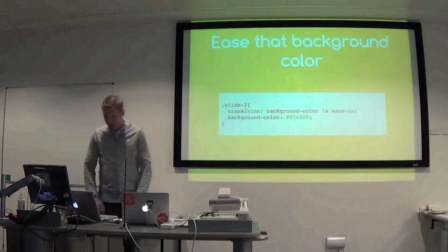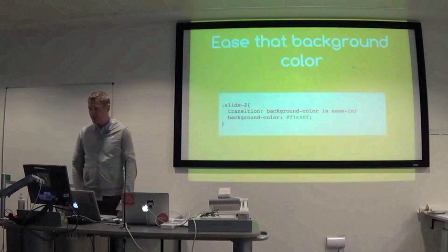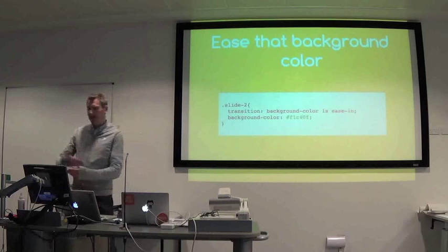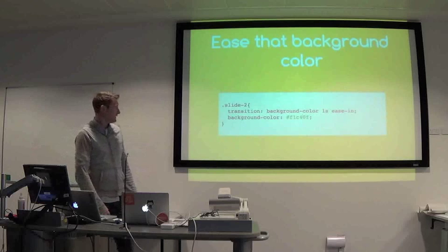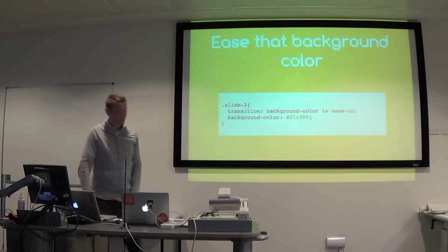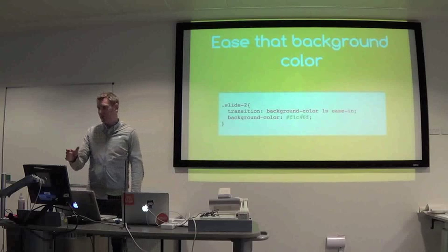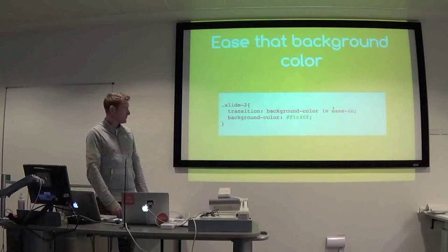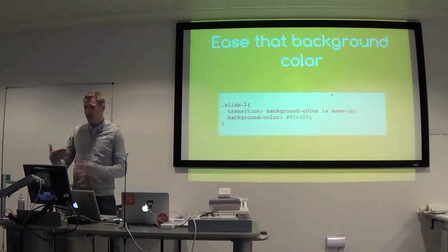All you're doing is changing the background color like you would normally in CSS. All I'm doing here is adding a new class which changes the background color. But because I've got this extra transition line, it's saying the first property is the property that I want to transition. 1s means 1 second — that's the amount of time I want for the transition to take.